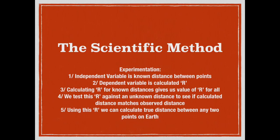On a flat Earth model, R can vary considerably. On a spherical Earth model, R must match from one calculation to the next and can predict calculations for other distances. On a flat Earth, all R values will calculate back to a single point such as the North Pole.